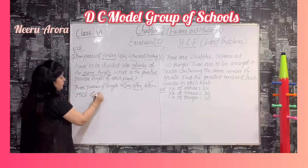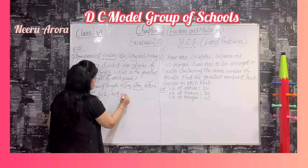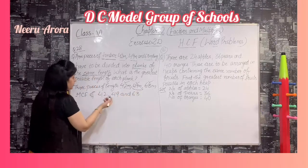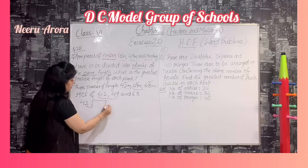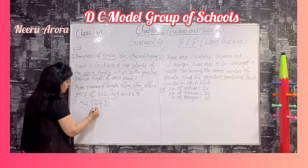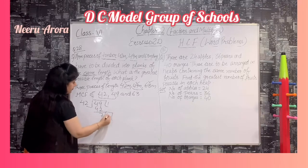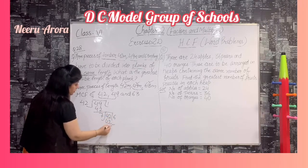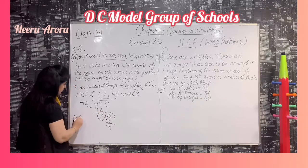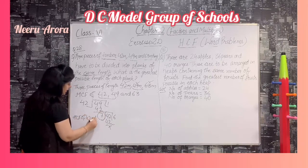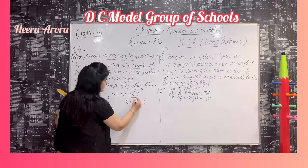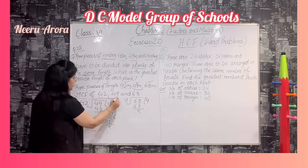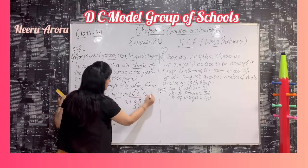So we find HCF of 42, 49, and 63. First, we take any two numbers. I have taken 42 and 49 — the HCF of 42 and 49 is 7. Now we find the HCF of 42 and 63 — the HCF of 42 and 63 is also 7.